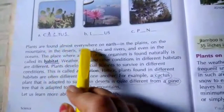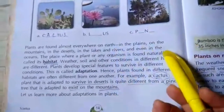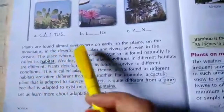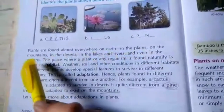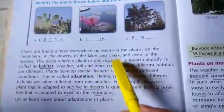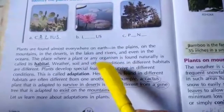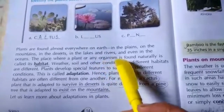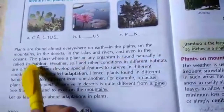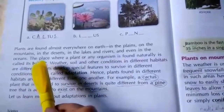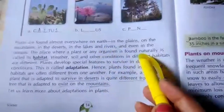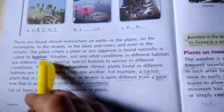Plants are found almost everywhere on earth — on plains, mountains, deserts, lakes, rivers, and even in oceans. The place where a plant or any organism is found naturally is called its habitat. Habitat is the natural home or environment for a plant or other organism to survive in.